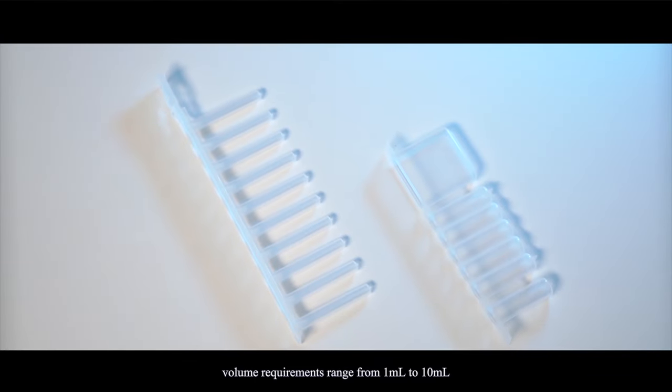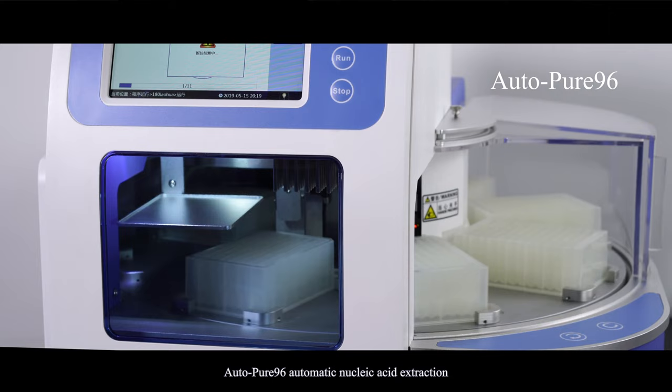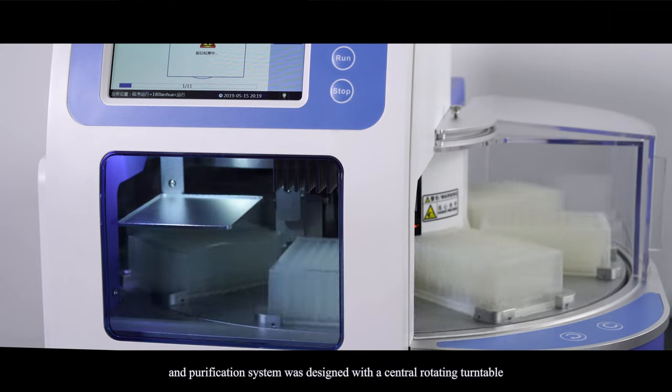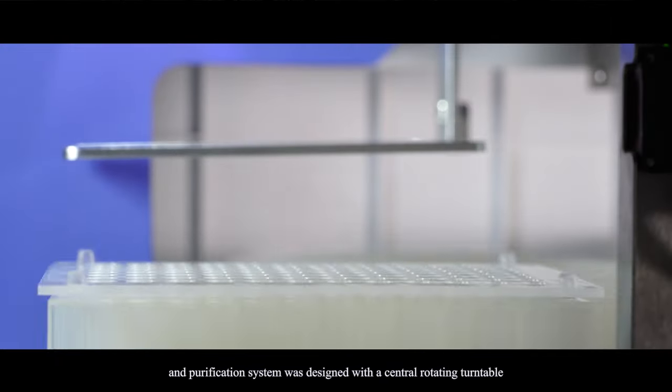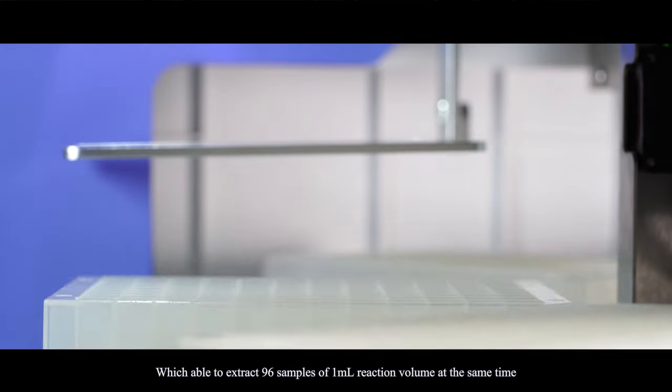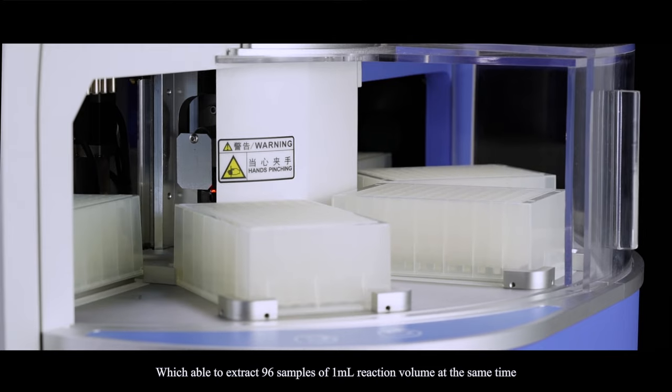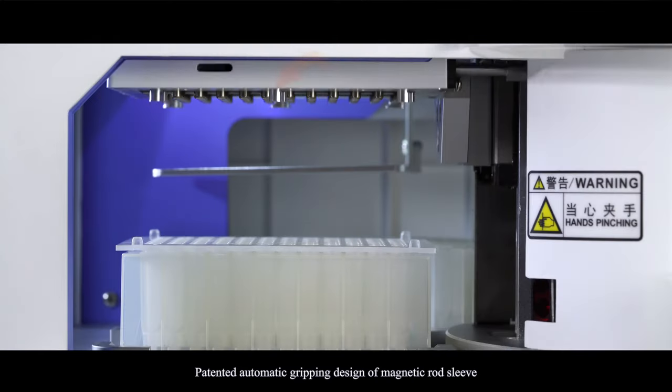Auto Pure 96 automatic nucleic acid extraction and purification system was designed with a central rotating turntable which is able to extract 96 samples of 1 milliliter reaction volume at the same time. Patented automatic gripping design of magnetic rod sleeve has achieved 99.99% success rate in 30,000 grabbing experiments.